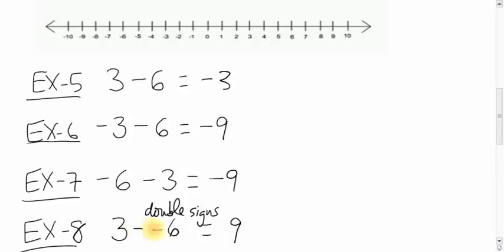The other way to do it is just to realize that when the signs are the same, like we have here, two negatives, that turns into a positive. So, instead of three minus negative six, this becomes three plus six, which is nine. Whichever way you want to think of it, just get the answer of nine.